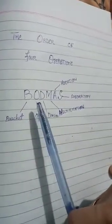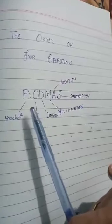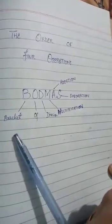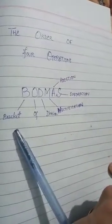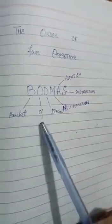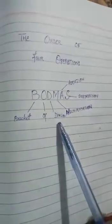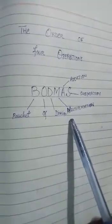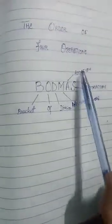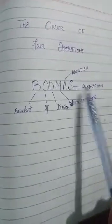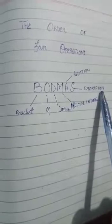BODMAS is the rule in which B stands for Bracket, O for Of, D for Division, M for Multiplication, A for Addition, and S for Subtraction.